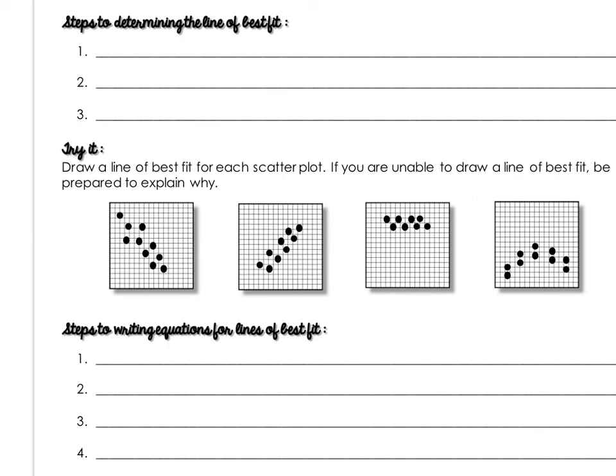So to determine the line of best fit, the first thing that you really need to do is make sure that the scatter plot does suggest a linear relationship, because if it doesn't, then you can't draw a line of best fit. But if it does, you're going to draw a line through two points.